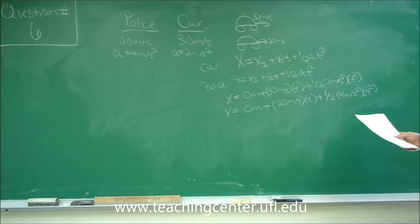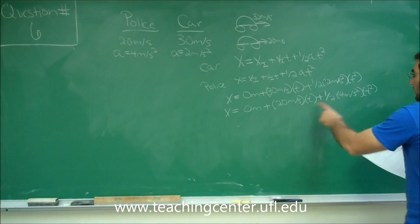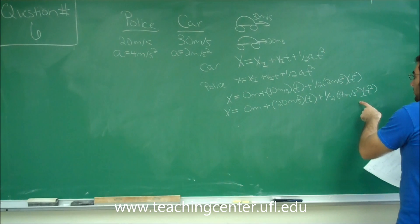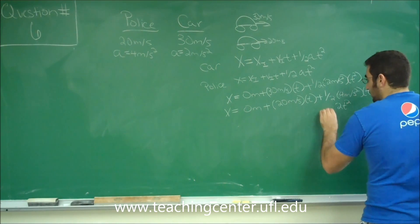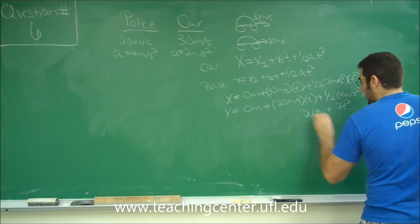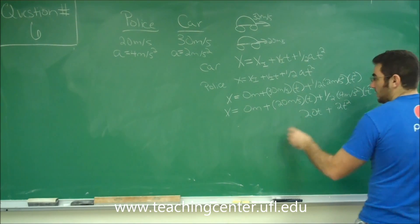So for this we can actually solve for the time. And we can go ahead and rearrange both of these equations and say that, okay, one half times 4 is 2. So we have 2t squared on this side plus 20t. So this is for the police officer.